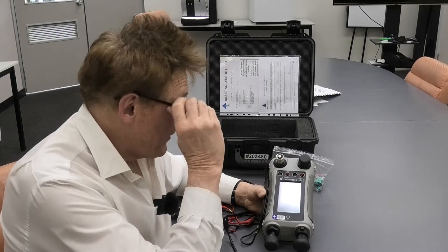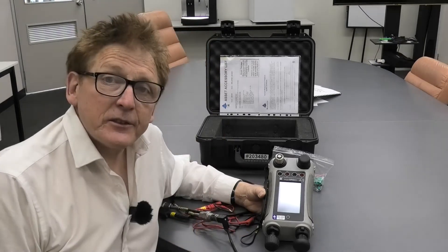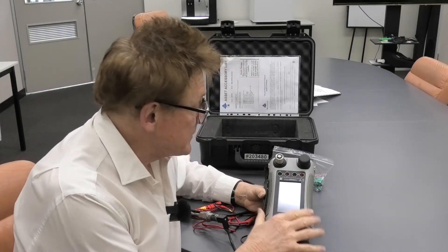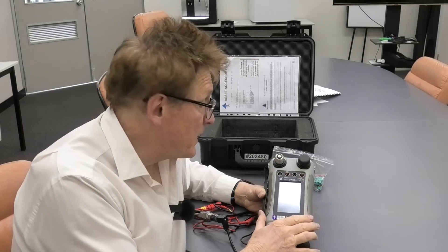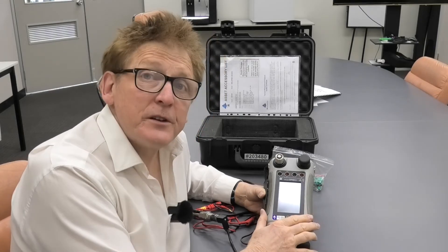Today we're just going to have a quick look at the Drakka DPI-611. Now the instrument we stock is the 20 bar instrument, so it's a 20 bar pressure calibrator. It will also do vacuum.